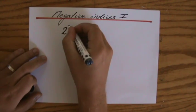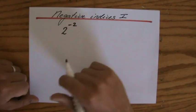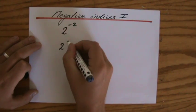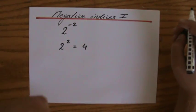For instance, 2 to the power minus 2. So we have an index which is negative. Now we all know that 2 to the power 2 equals 4, because 2 to the power 2 means 2 times 2.